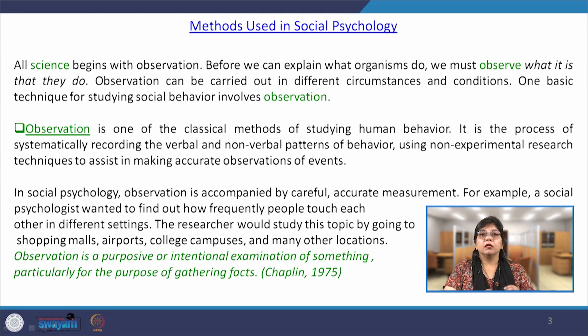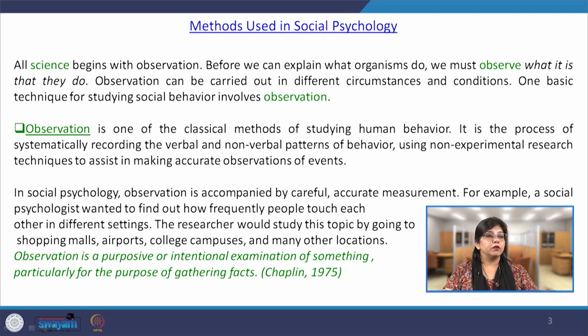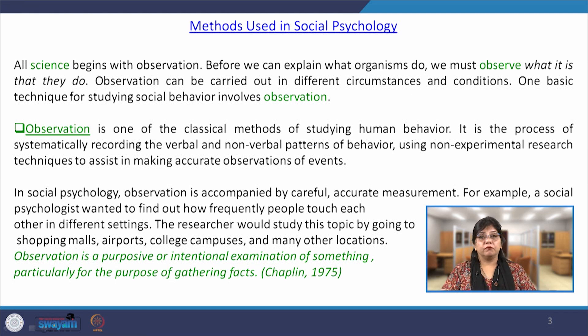Now, methods used in social psychology: if we talk about research methods or the scientific manner in which we can study human behavior, there can be a discussion about different types of methods such as observation, experimental method, case studies, interviews, surveys, and even more quantitative analysis.